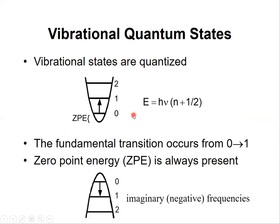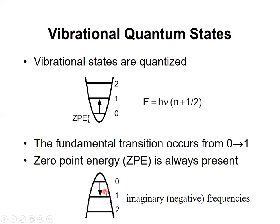The vibrational energy levels are equally separated, and each higher level increases the energy of the molecule. The fundamental transition is from level zero to one. Suppose the curvature of a vibrational energy level is inverted — in that case, any vibration decreases energy rather than increasing it. This happens at a transition state. If you find any imaginary or negative frequency, it means the vibrational curvature is inverted. An imaginary frequency means the curvature is inverted and energy decreases with vibration rather than increasing.